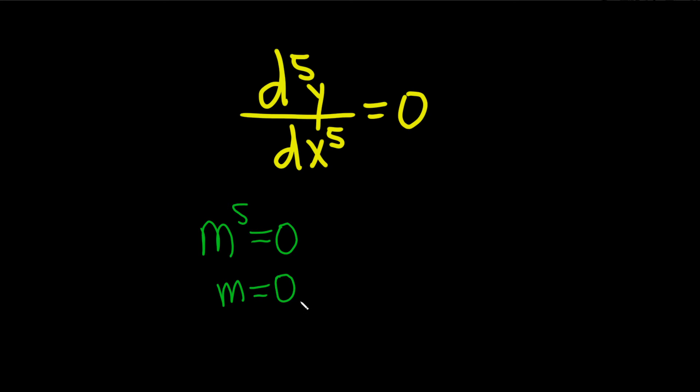And it appears five times. So the multiplicity, where we have five copies of m, so the multiplicity is five.